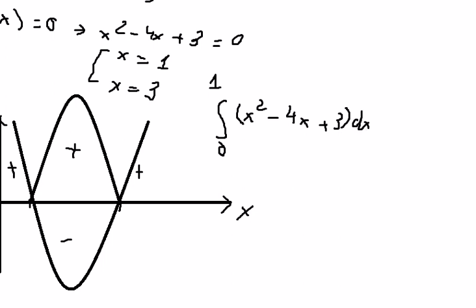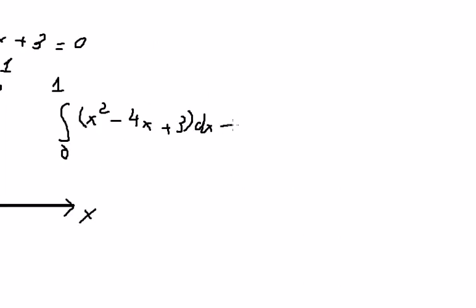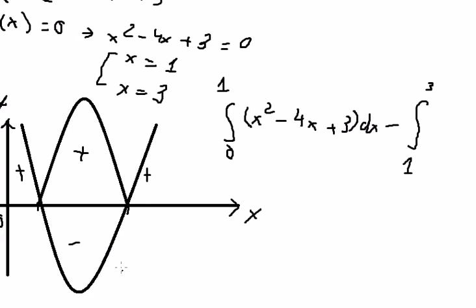Later we put the negative here. So we go from 1 to 3, because we want to flip this area. That's why we put the negative, and the negative gives us the positive area here.